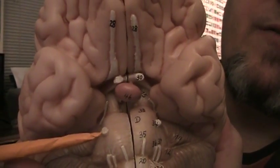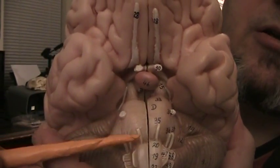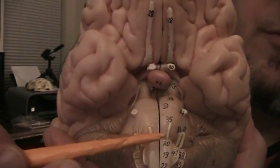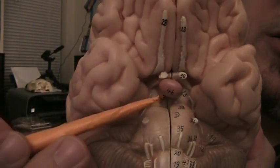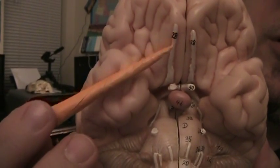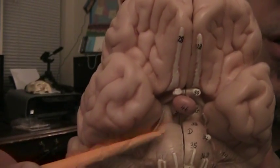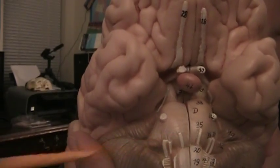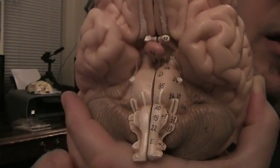Number six on the midline, right here, abducens nerve. So in a sense we have the midline structures number 1, 2, 3, 6 as far as the midline structures.